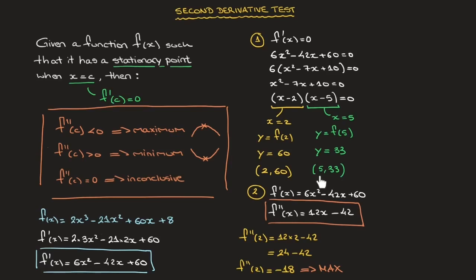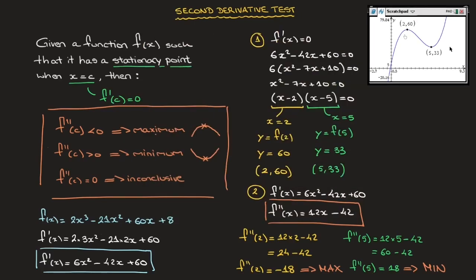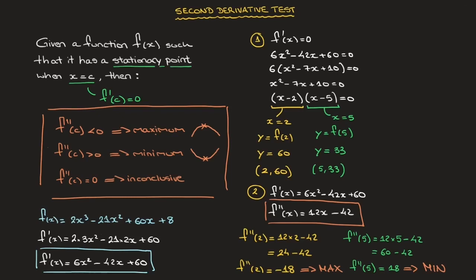For the second stationary point at x = 5: f''(5) = 12(5) − 42 = 60 − 42 = 18. Since 18 is positive, the stationary point (5, 33) is a minimum. We've successfully shown that f(x) has stationary points at (2, 60) and (5, 33), with the first being a maximum and the second a minimum — exactly what we saw on the calculator. That's how to use the second derivative test for classifying stationary points.